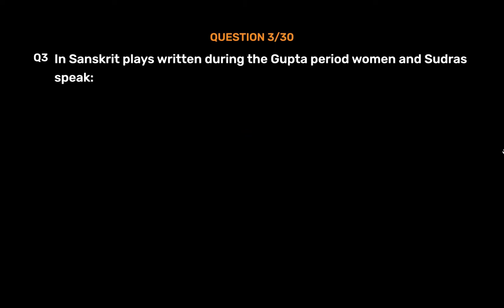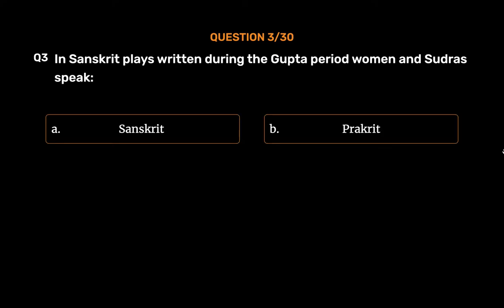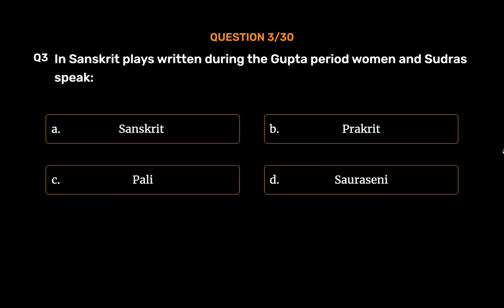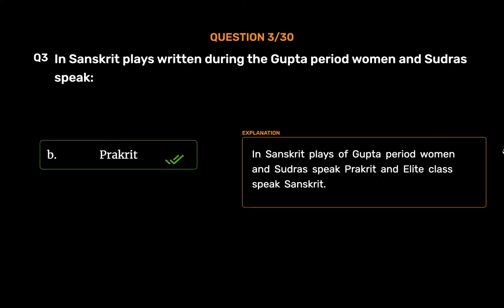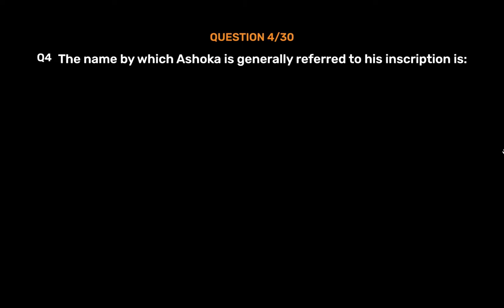Question number three: In Sanskrit plays written during the Gupta period, women and Shudras speak — Option A: Sanskrit, Option B: Prakrit, Option C: Pali, Option D: Sauraseni. The correct answer is Option B, Prakrit. In Sanskrit plays of the Gupta period, women and Shudras speak Prakrit, while the elite class speaks Sanskrit.